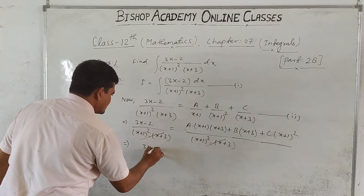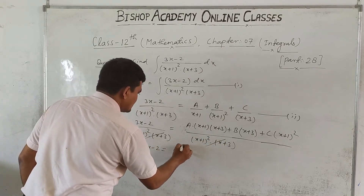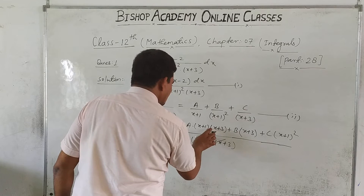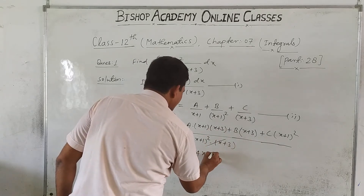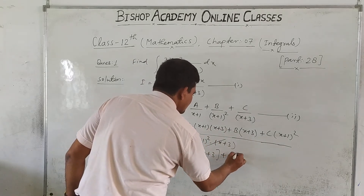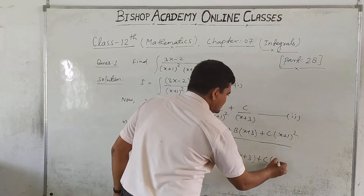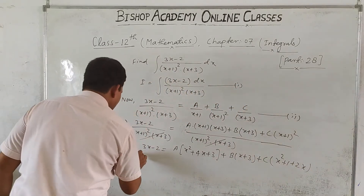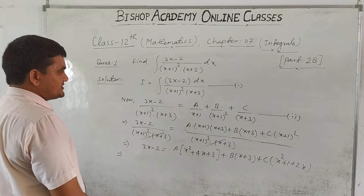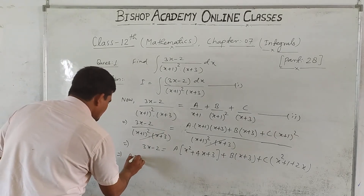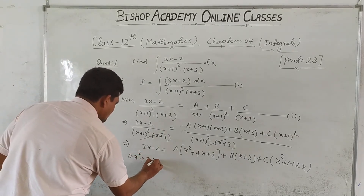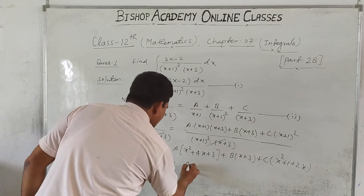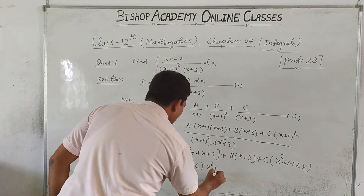So 3x - 2 equals A multiplied by (x² + 4x + 3) plus B(x + 3) plus C(x² + 2x + 1). We need to find the values of A, B, and C. Comparing, we write: 0·x² + 3x - 2 equals (A + C)·x² plus...